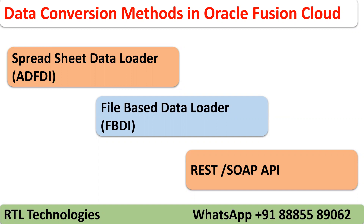If your client is using web applications and wants to exchange data between them — whether loading or extracting — we use REST APIs. So these are the three different methods used for data conversions in Oracle Cloud Fusion, whether it is Financials or Supply Chain Management. Functional consultants can be involved with Spreadsheet and FBDA, while technical developers typically work with REST or SOAP APIs. Functional consultants can work with spreadsheet and FBDA templates too.